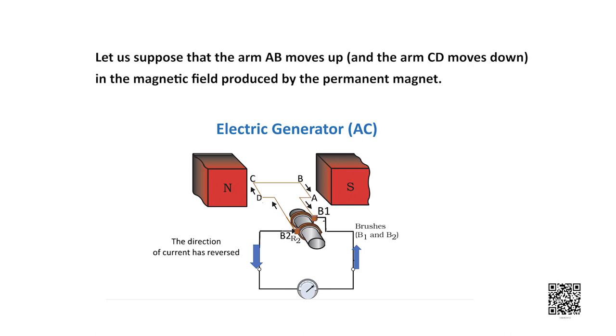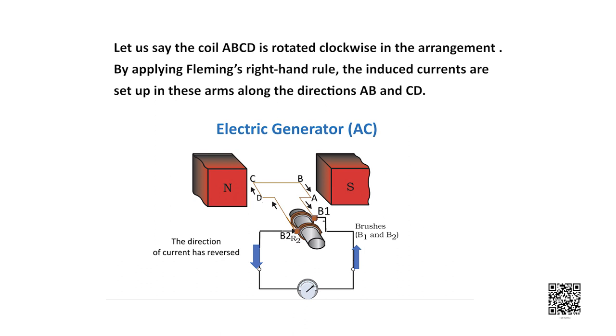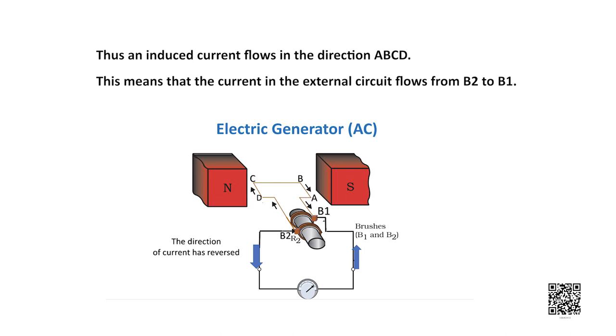Let us suppose that the arm AB moves up and arm CD moves down in the magnetic field produced by the permanent magnet. Let us say that the coil ABCD is rotated clockwise in this arrangement. By applying Fleming's right hand rule, the induced currents are set up in these arms along the direction AB and CD. Thus the induced current flows in the direction A, B, C, D.